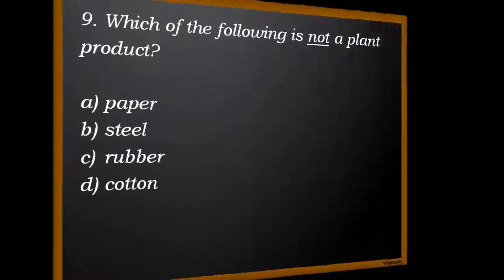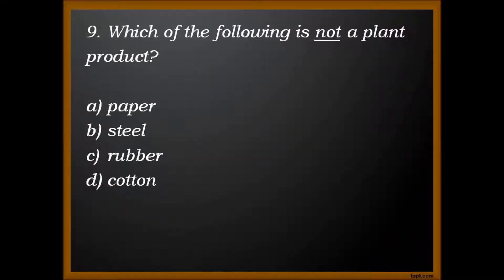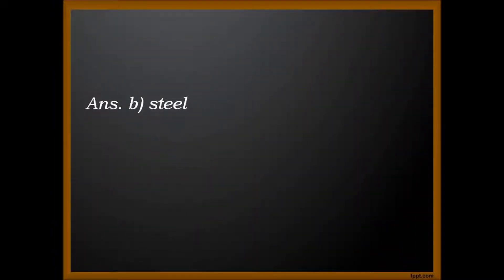Question 9. Which of the following is not a plant product? A. Paper. B. Steel. C. Rubber. And D. Cotton. Answer. B. Steel.